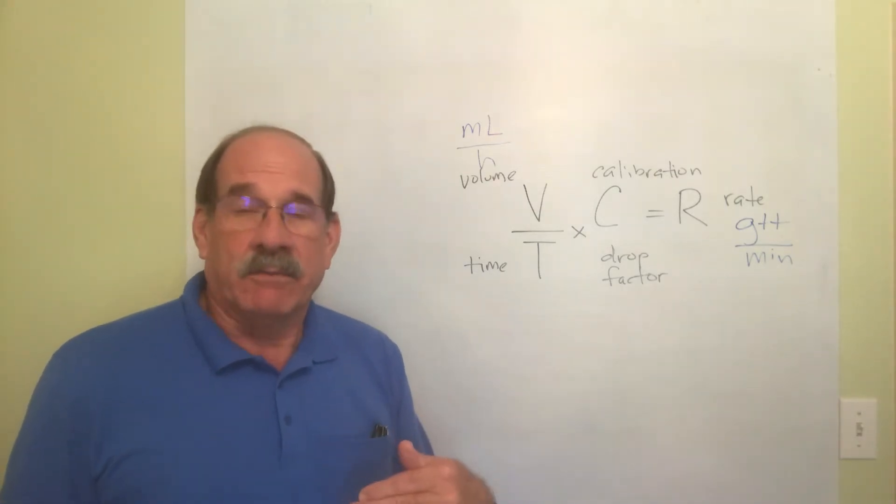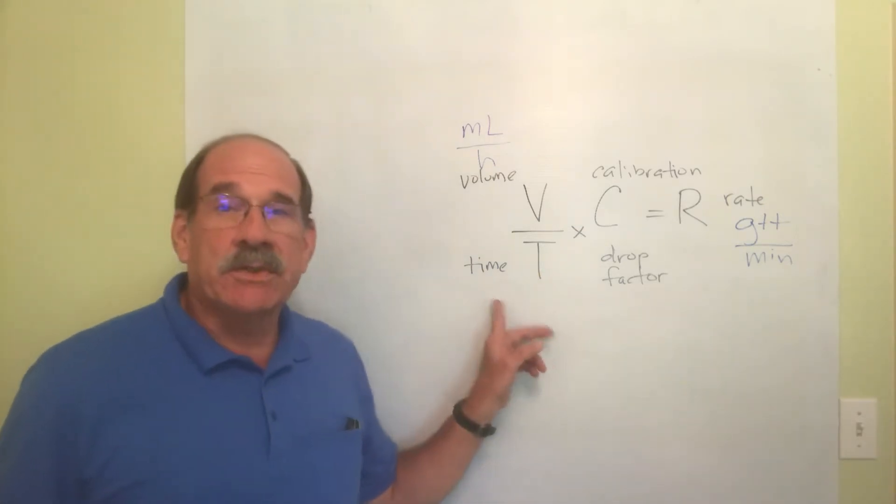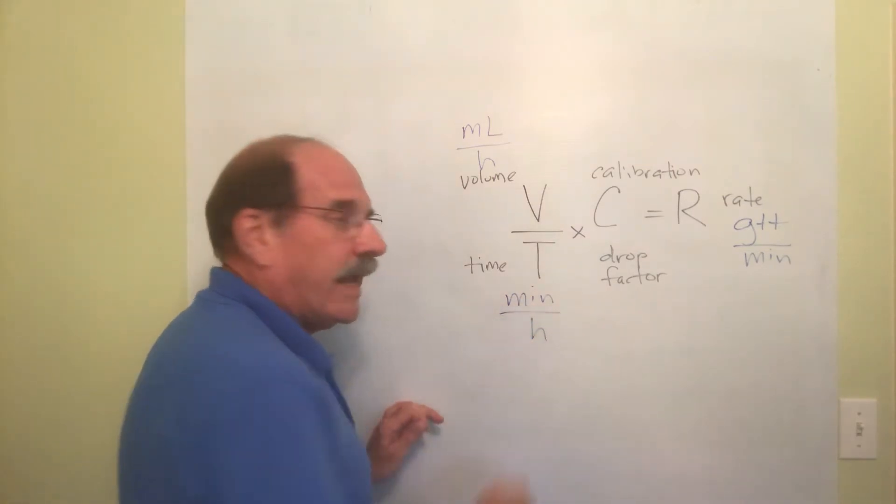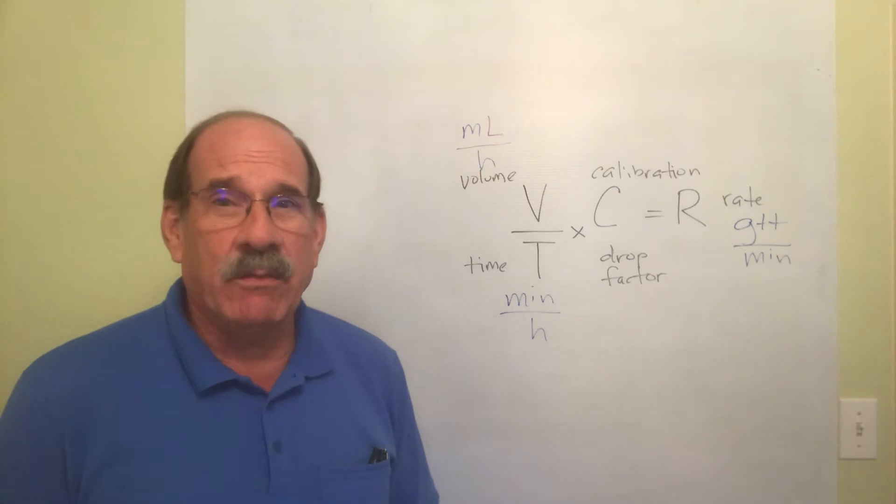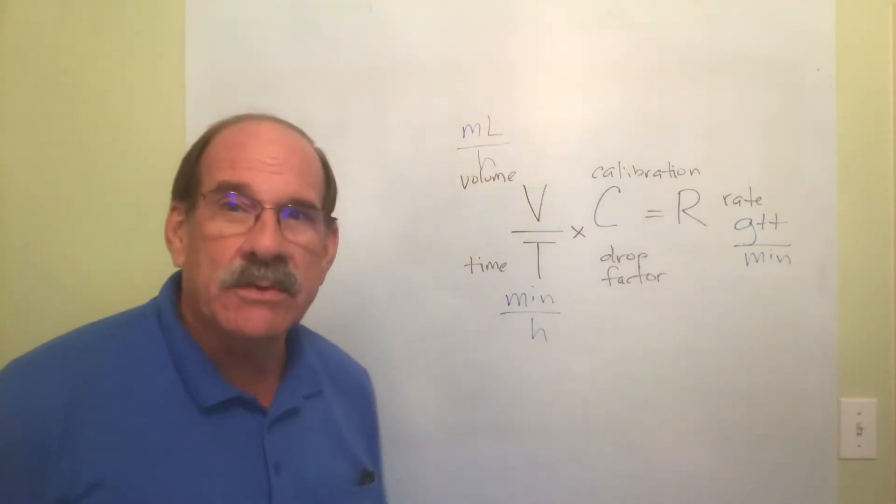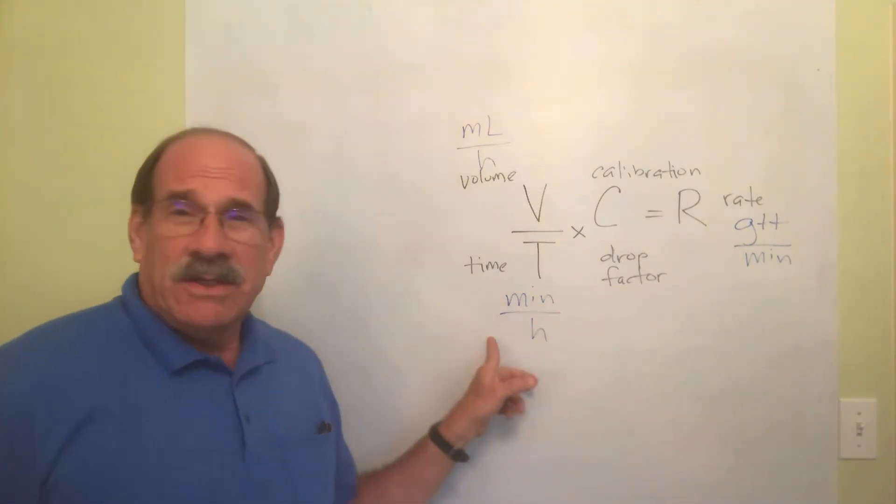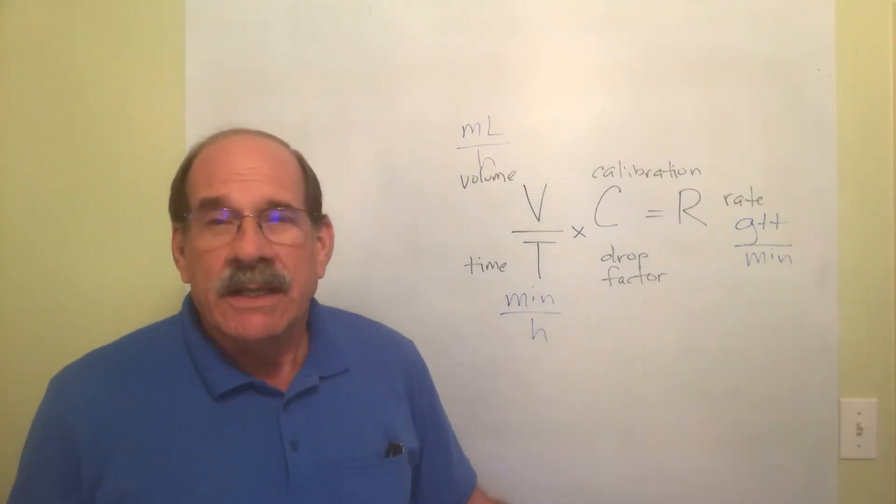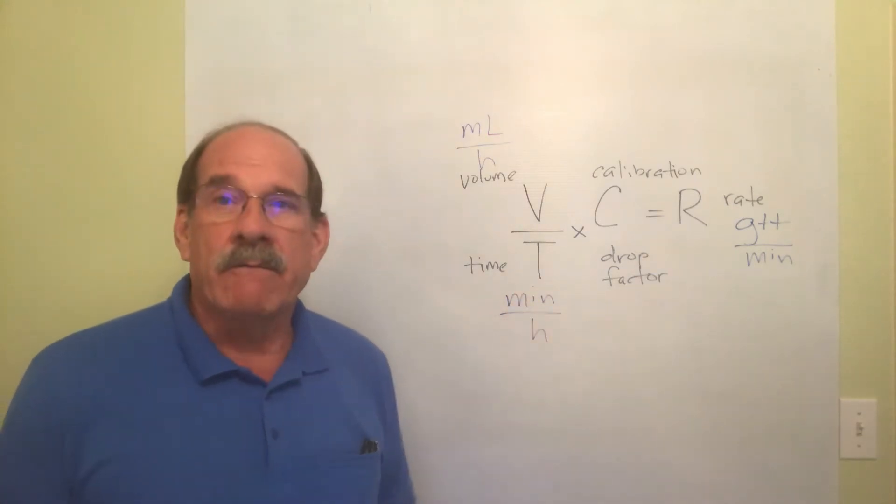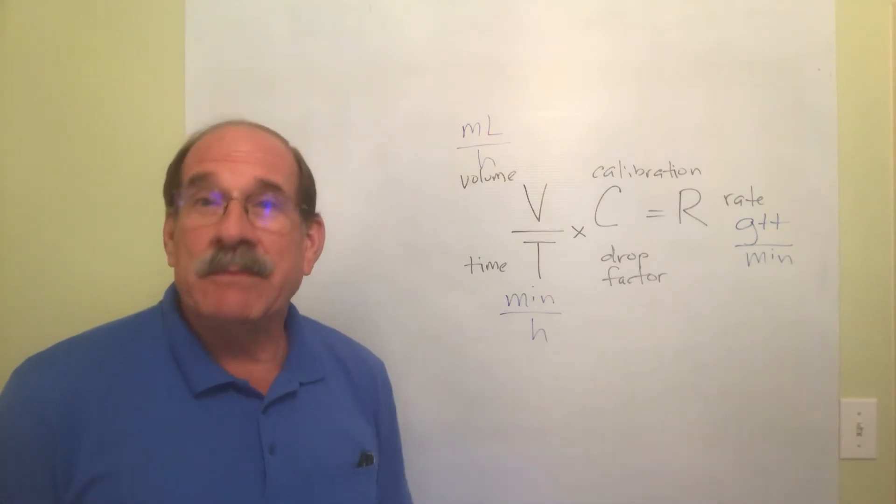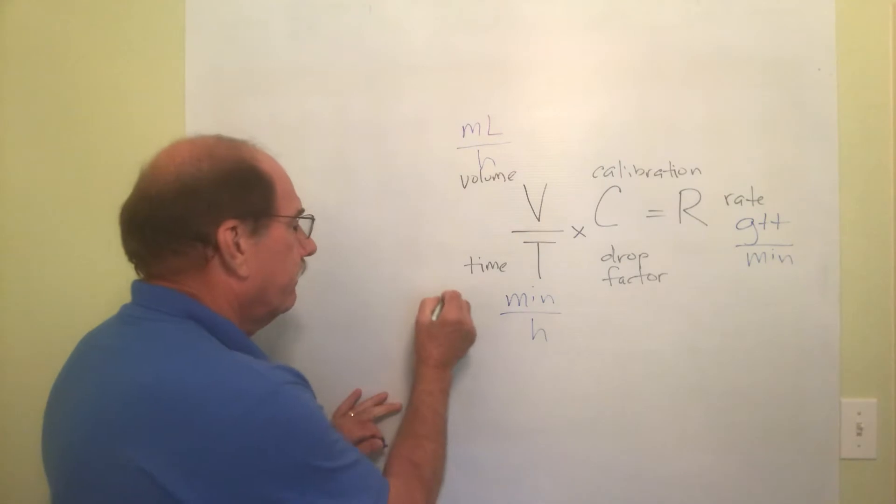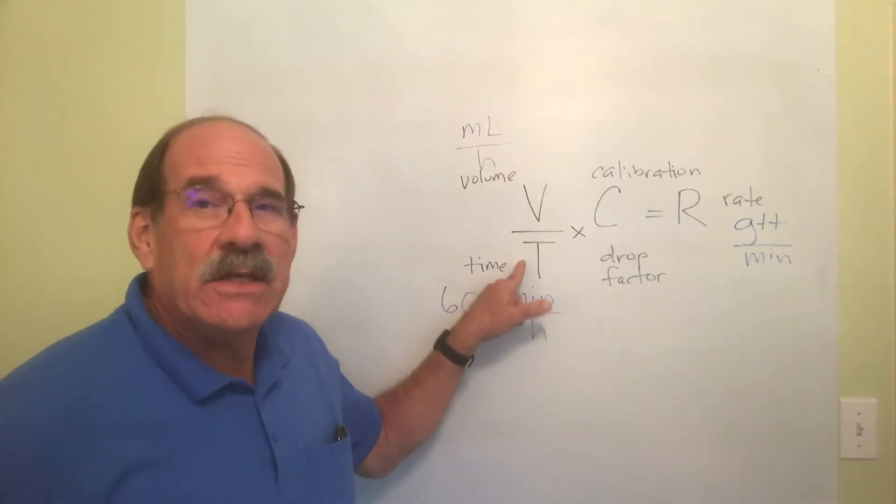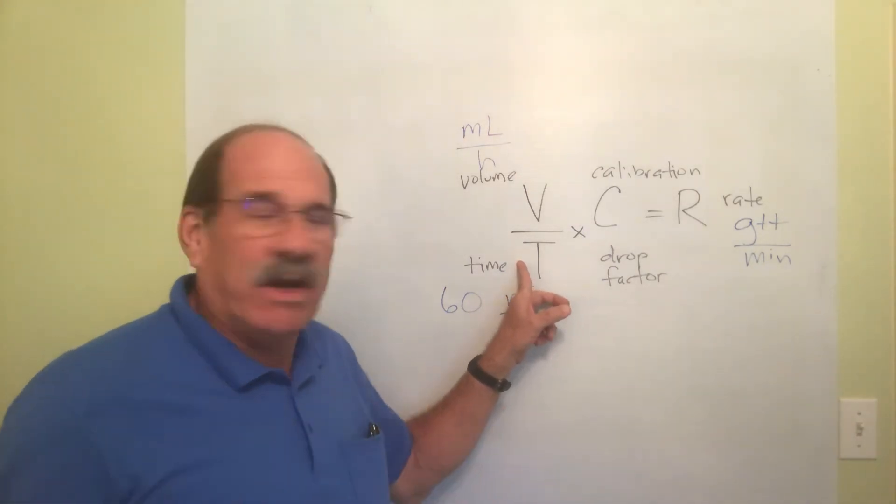A caution: it's not the total number of milliliters you're giving the patient, it's the number of milliliters you're giving for each hour that goes by - milliliters per hour. Now T stands for time. What you plug in here is time as the number of minutes per hour. The number of minutes per hour is always the same, it never varies. Even in leap year, even when we change our clocks for daylight saving time, the number of minutes per hour never changes. How many minutes are there per hour? 60. So what is this number for T always going to be, no exceptions ever? The number 60.